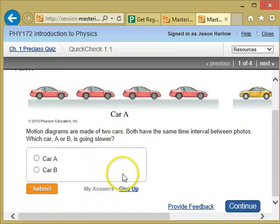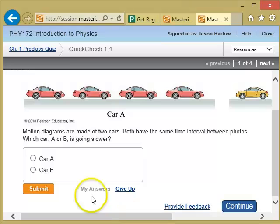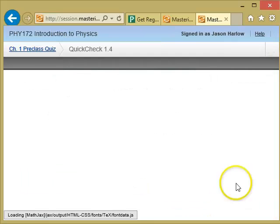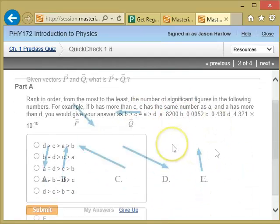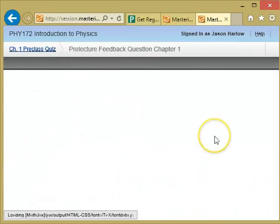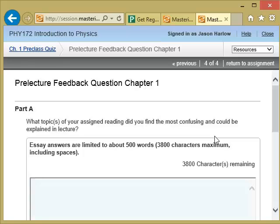Here's the first question. It's about motion diagrams. And when you click on the answer, you don't actually see if you're right or wrong at this point. But that's actually by design because the whole point is that you're supposed to be coming to class and we'll let you know in class what was right and what was wrong.